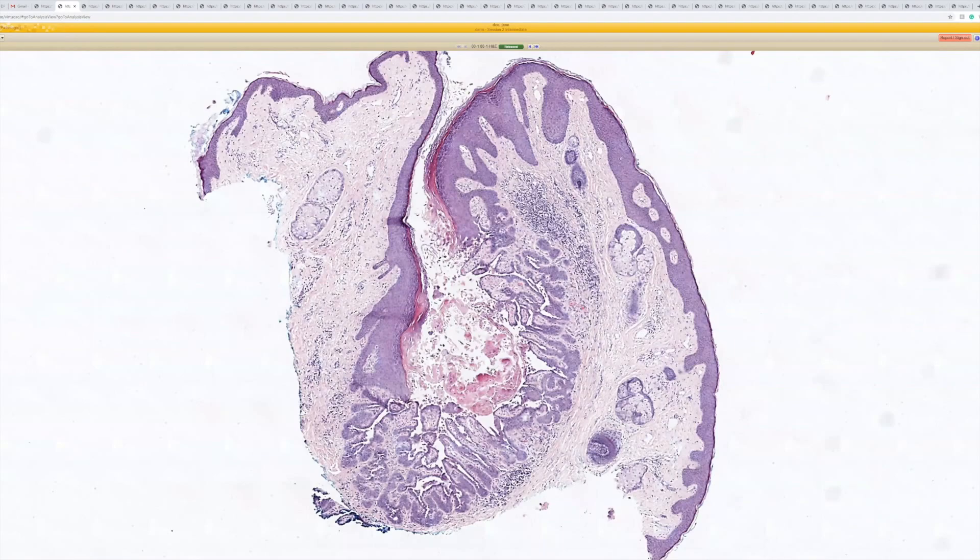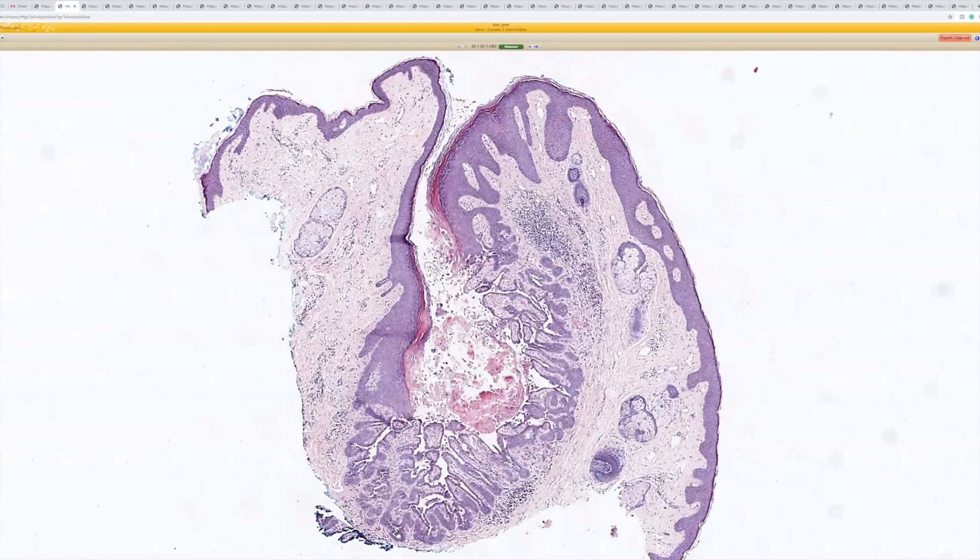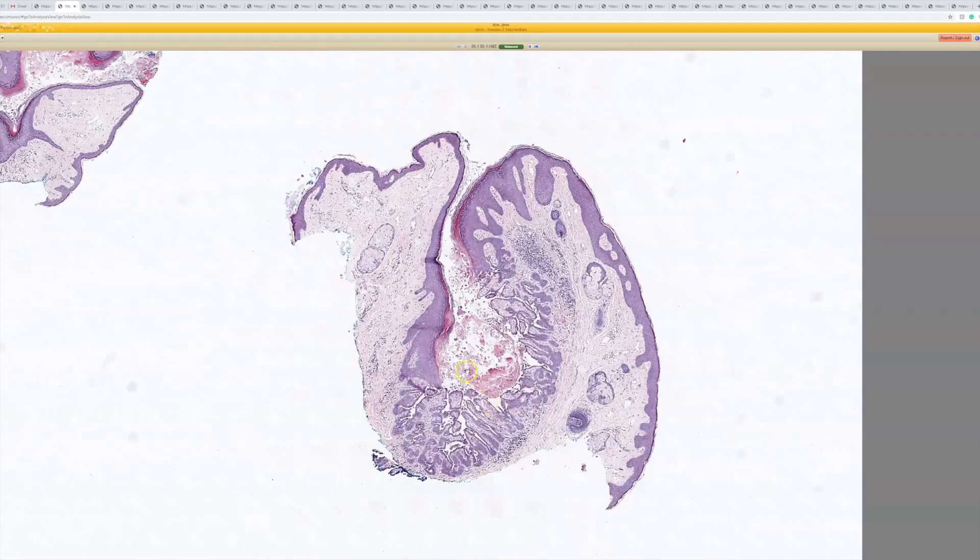So we know that there's multiple lesions that can give acantholysis and dyskeratosis, and the different way to classify them depends on their distribution clinically and their shape microscopically. So if it looks